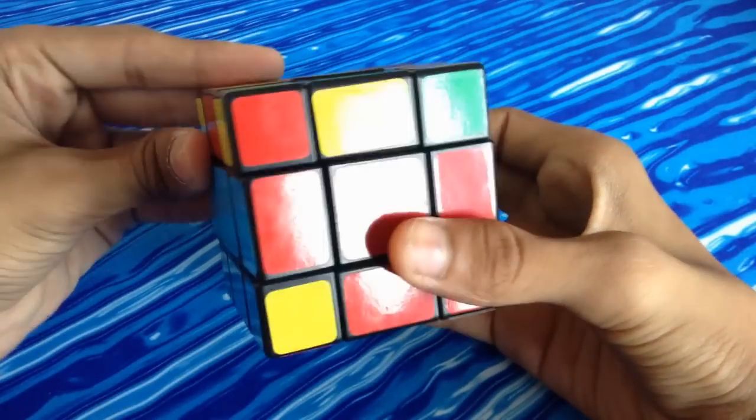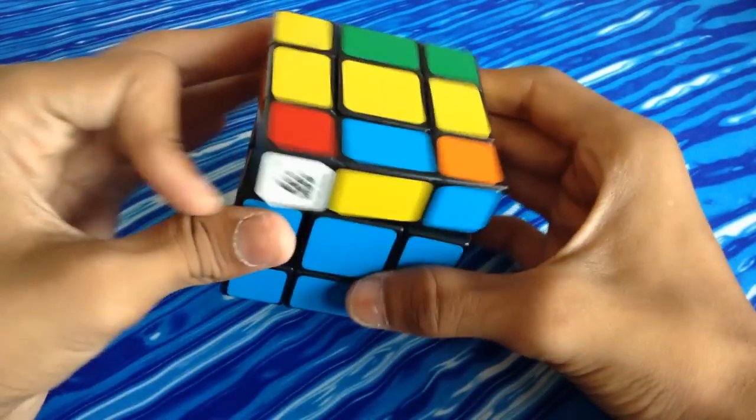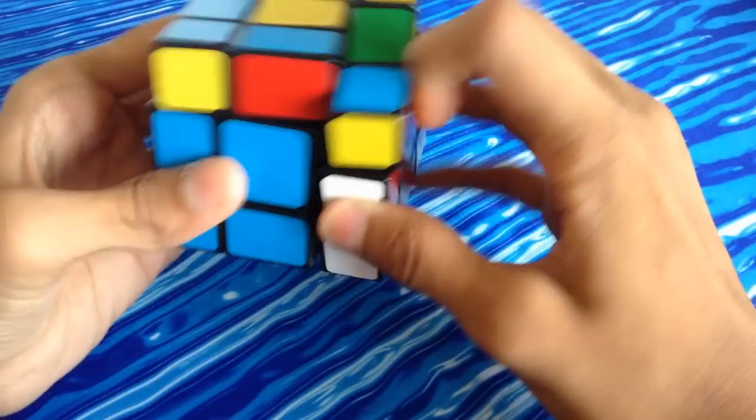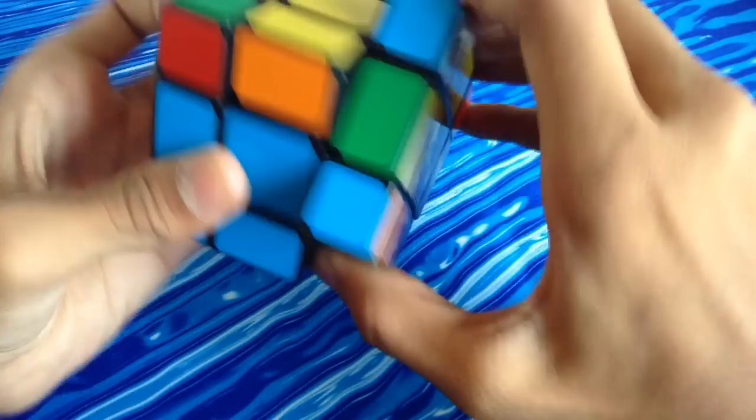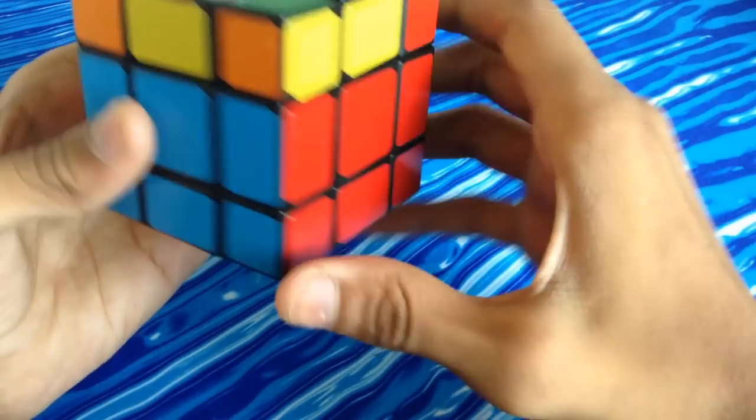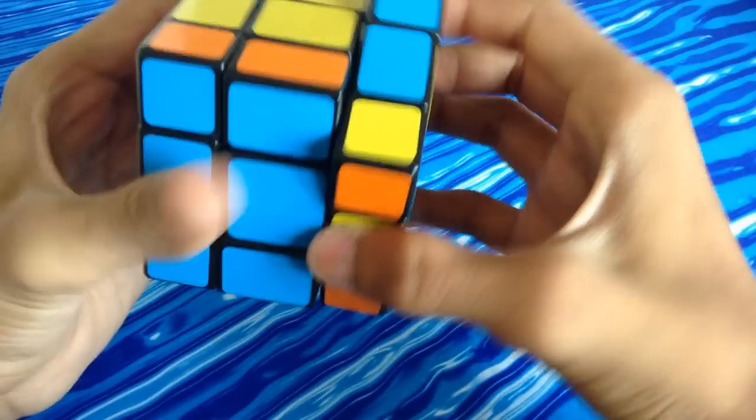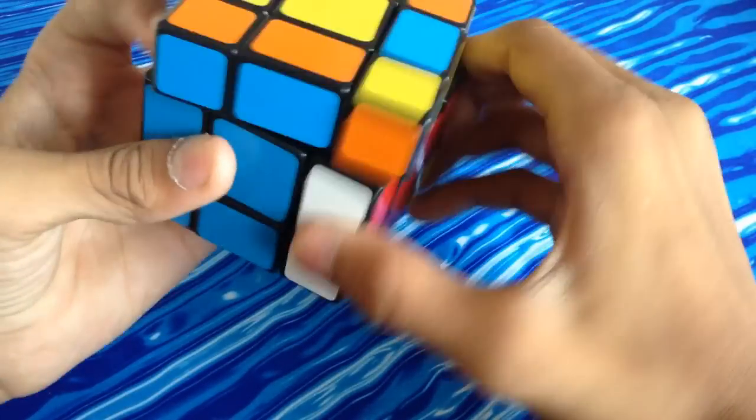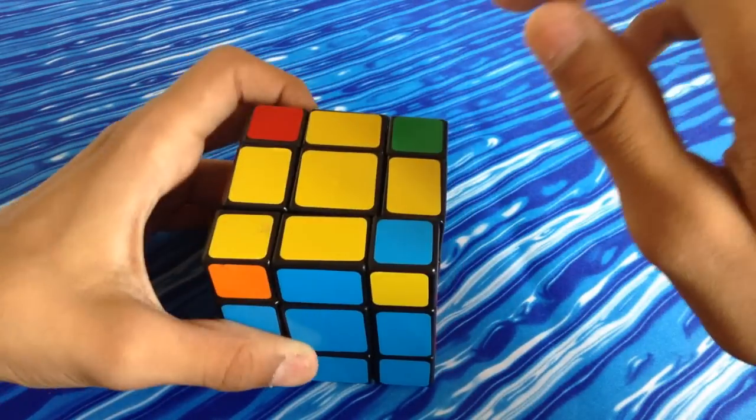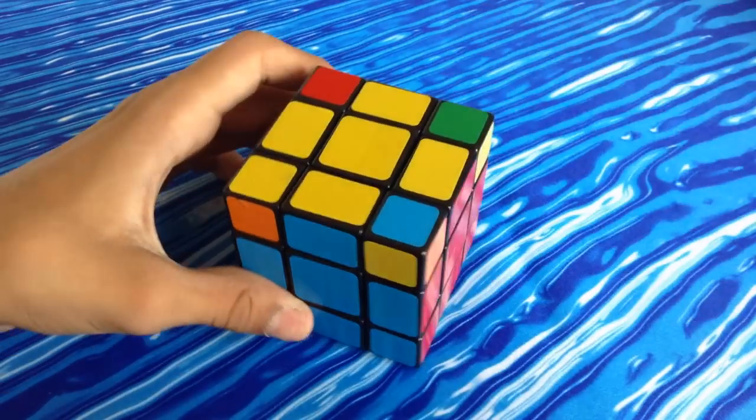And now if you put it back into normal orientation, you can solve it like a normal three by three. And as you can see, the cross can be formed. So that's how you do it.